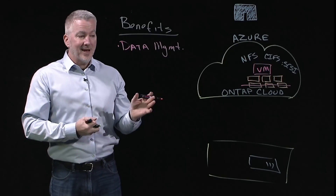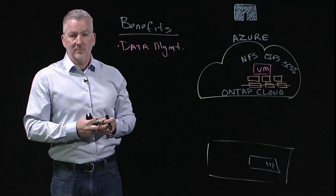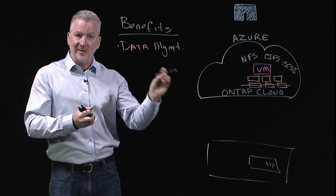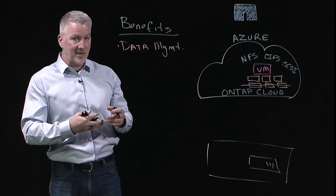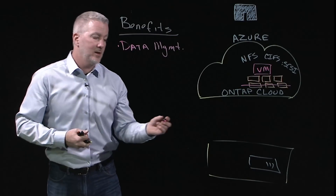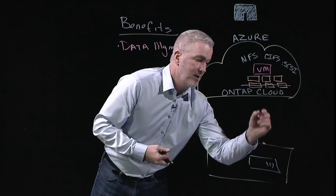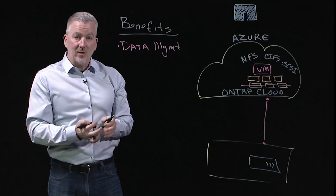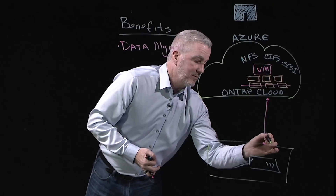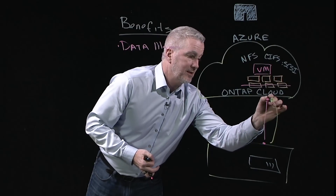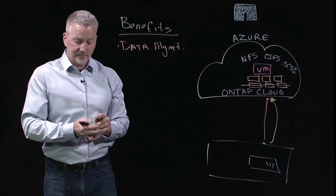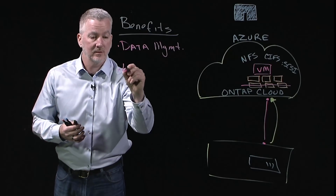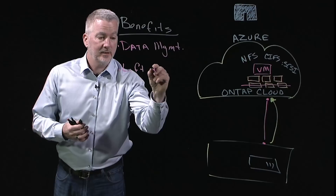How do you get your data to the cloud easily? Spinning up compute is relatively easy in the cloud, but moving data into and out of the cloud is not. With ONTAP, you can take advantage of network connections between your on-premises data center and, using SnapMirror, quickly and easily move that data up to your ONTAP Cloud system. This is what we call lift and shift.